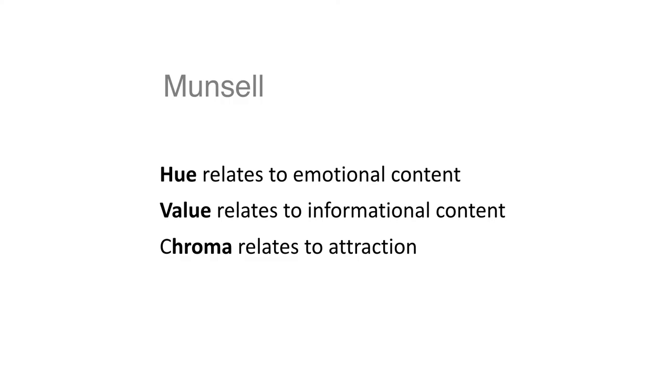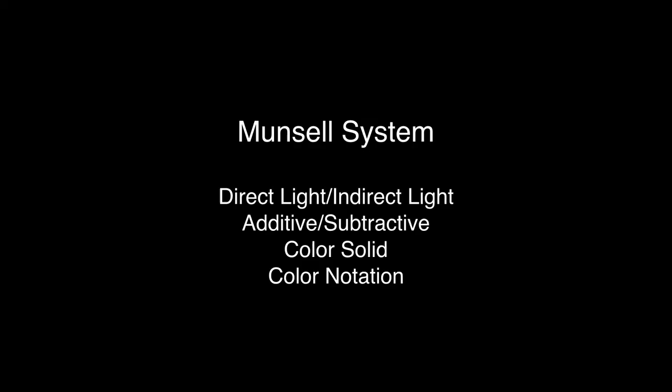So chroma is basically the saturation. Value is the ability to see the color. Color and hue relates to the strength of the color. Munsell is used with both direct light and indirect light. So it can be both additive and subtractive. It includes a color solid. And it is designated by color notation rather than color properties.